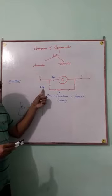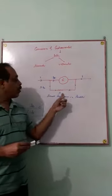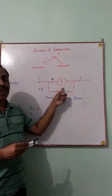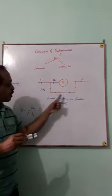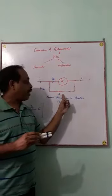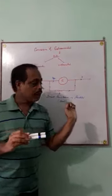Our purpose is that the maximum amount of current should flow through this resistance, so the value of S should be small. Hence, a small resistance in parallel is called a shunt.